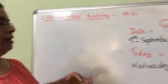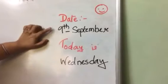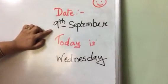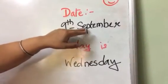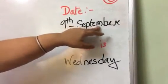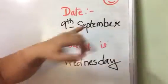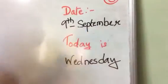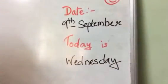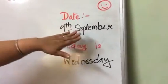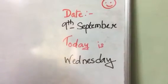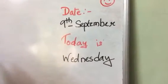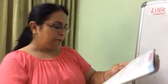Before we start, let us see what day it is today — today is 9th September. Let's learn the spelling: S-E-P-T-E-M-B-E-R. As I told you before, for big spellings we can break them into smaller parts of 3 or 4 letters, so it becomes easy to read.